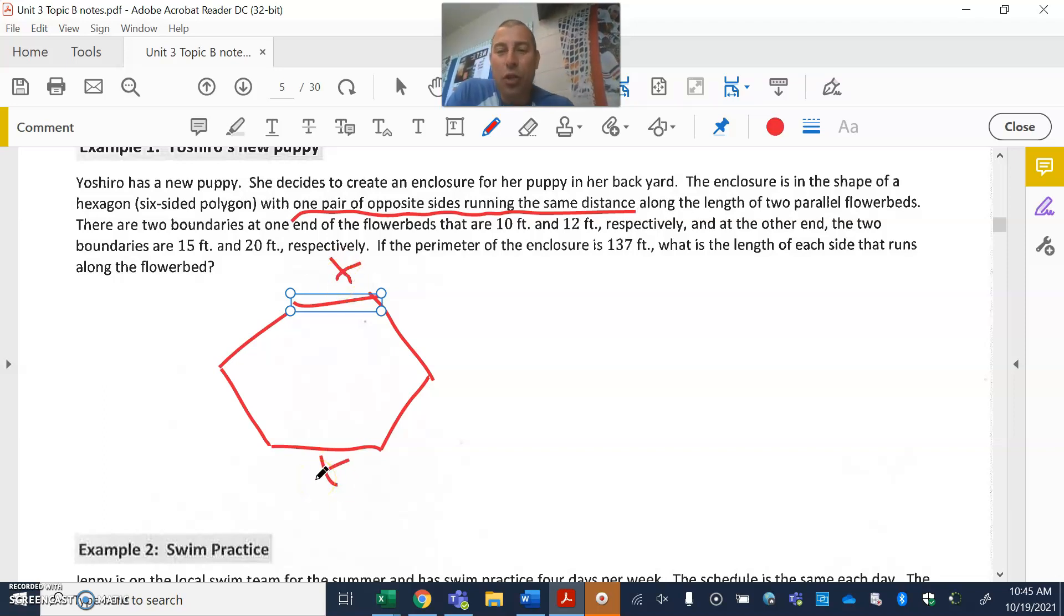There are two boundaries at one end that are 10 and 12, and at the other end 15 and 20. Perimeter is 137. What's the length of each side that runs along the flower bed?